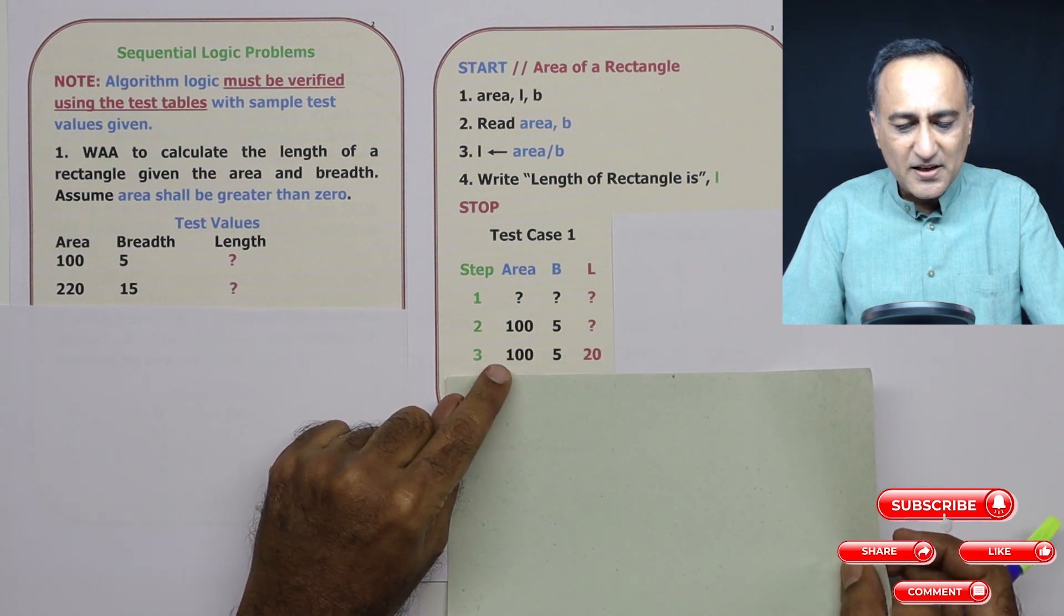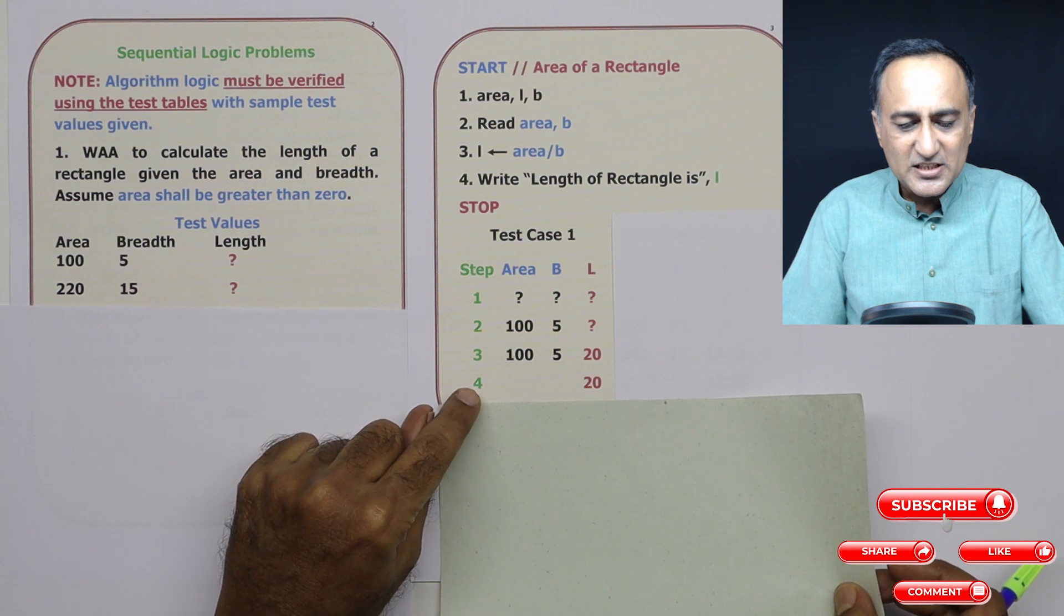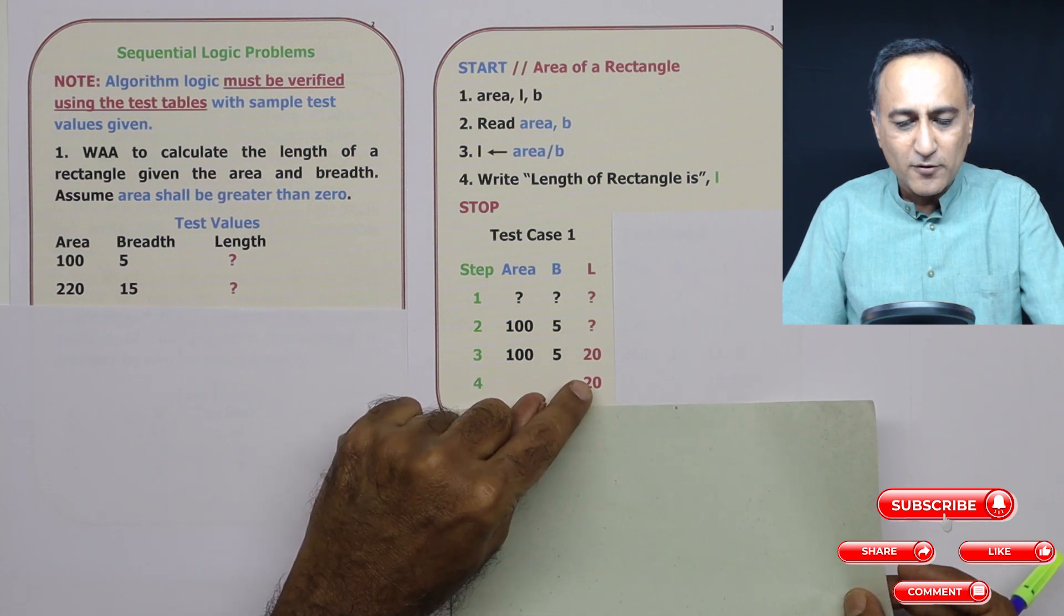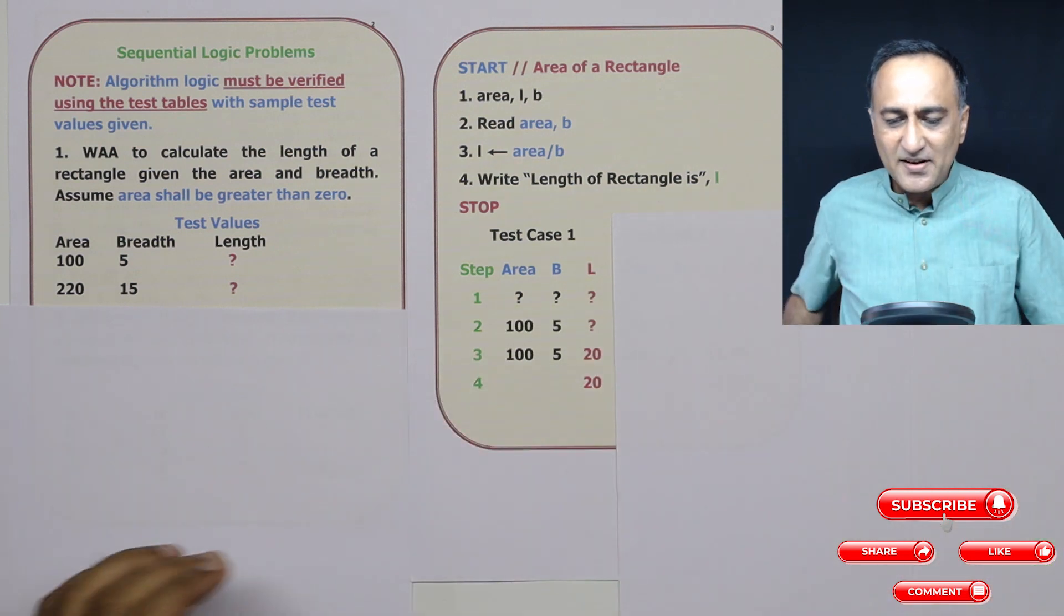At step three, I've done the calculation: 100 divided by 5 is 20. At step four, I am printing the value of length as 20. This should clarify how you check the length of a rectangle.